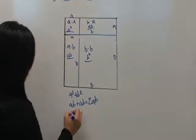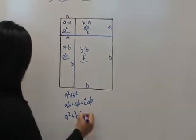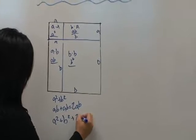So the total square is A squared plus B squared plus 2AB equals total square.